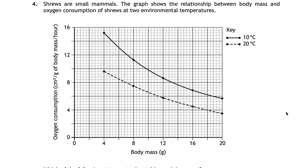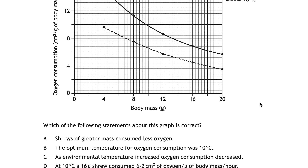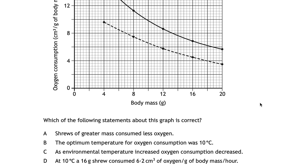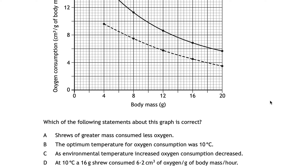Question four is a graph-based question about shrews — small mammals. The graph shows the relationship between body mass and oxygen consumption at two environmental temperatures: the black line is 10 degrees Celsius and the dashed line is 20 degrees Celsius, with body mass on the x-axis and oxygen consumption on the y-axis. Go through each statement A, B, C and D to find which one is true. Even if you think statement A is correct, go through the rest to make sure the others are false.